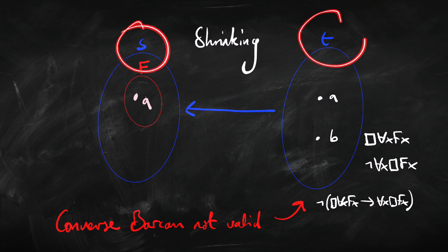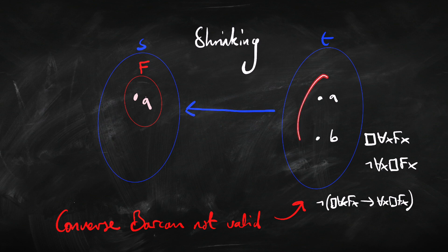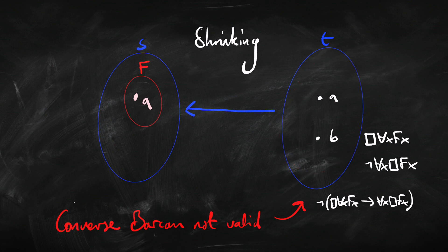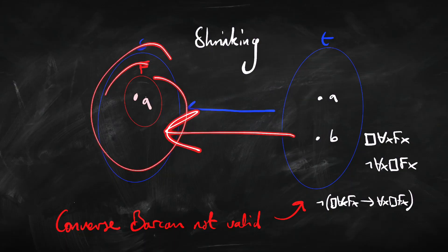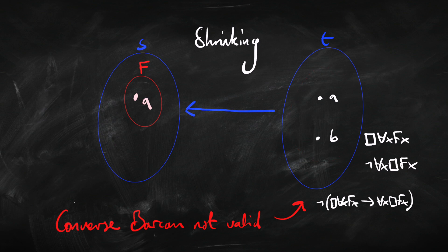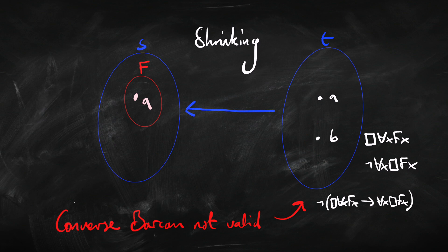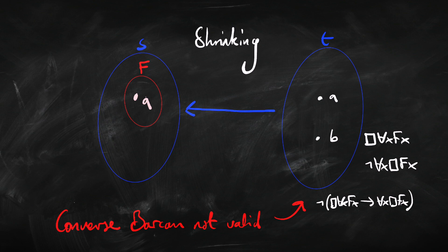Here's a shrinking domain model. This time, world S is accessible from world T — the arrow goes this way. Two things over in T, just one over in S. A is the only thing that's F. So what's true over in world T? Well, necessarily everything's F — because there's only one accessible world, S, and in that world everything is F, which is just A. But it isn't true that everything over in T is necessarily F: A is necessarily F, but B isn't — because B isn't an F over in world S. B isn't anything at that world. So the antecedent of the converse Barker sentence is true, the consequent is false — that's a counterexample. In shrinking domain models, the converse Barker sentence isn't valid.